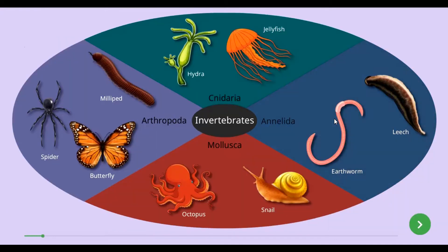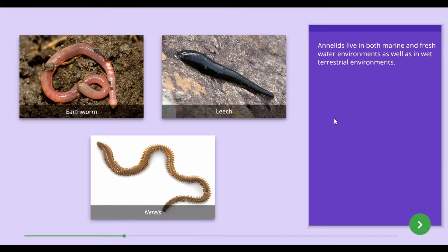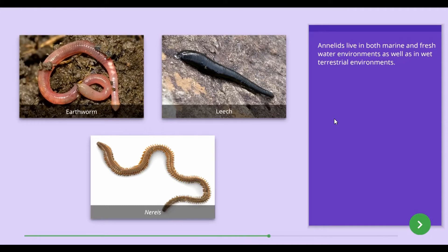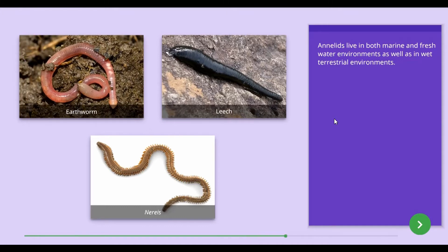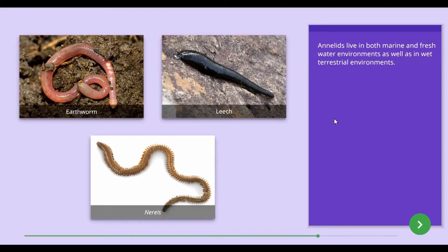Now let us study about another invertebrate group: the Annelida group. Annelids successfully live in three types of environments, namely marine, freshwater, and terrestrial environments. Earthworm, leech, and nereis can be given as examples of animals belonging to the Annelida group.